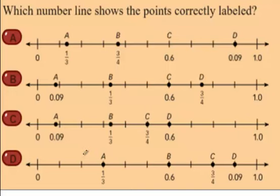Hi, Kipsters. This is Lesson 10, Ordering Rational Numbers, and this is number 4, a problem you all identified as being a little bit tricky, and I can see why. The question's short. Which number line shows the points correctly labeled?